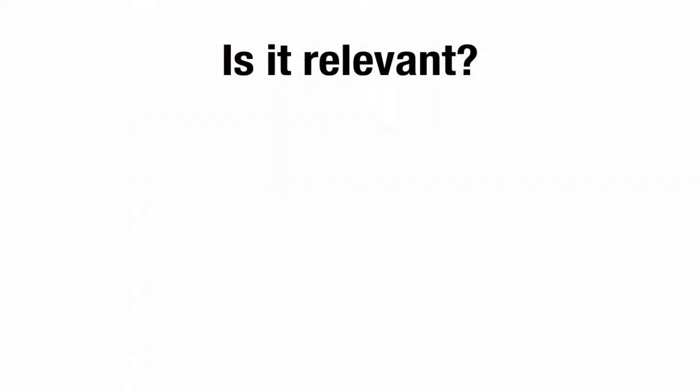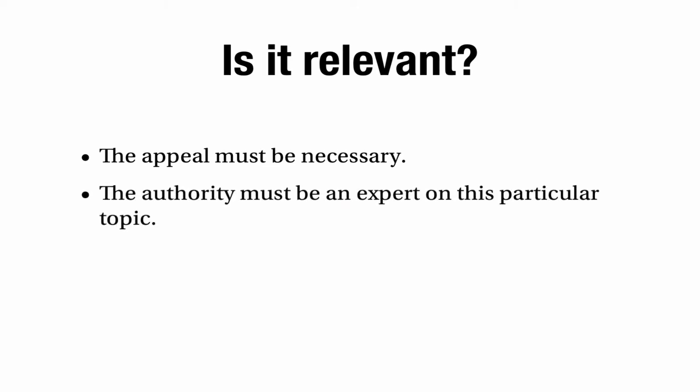So we need to think about when appeals to authority are acceptable and relevant. Firstly, it must be necessary to make that appeal — it must be about an issue where I can't make up my own mind or find evidence myself, and I've got to turn to an authority figure. Secondly, the authority has to be an expert on the particular topic we're talking about. So it's okay to use the GP as an authority when something is wrong with you medically, but it's not acceptable to use doctors as authority figures on other topics — for example, climate change or politics.